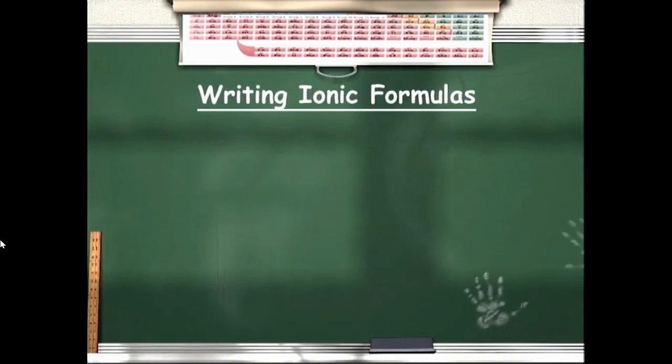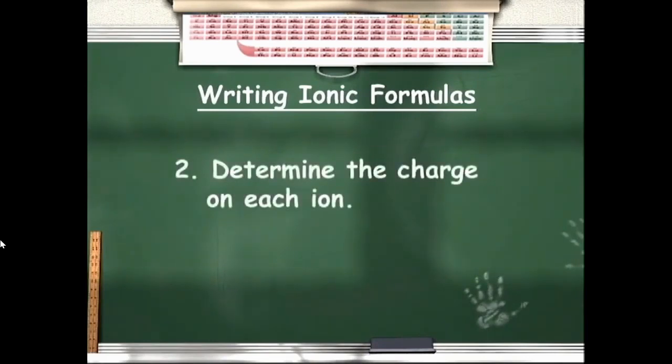The next step in writing our ionic formula is to determine the charge on each ion. We can use the periodic table to determine ionic charge.